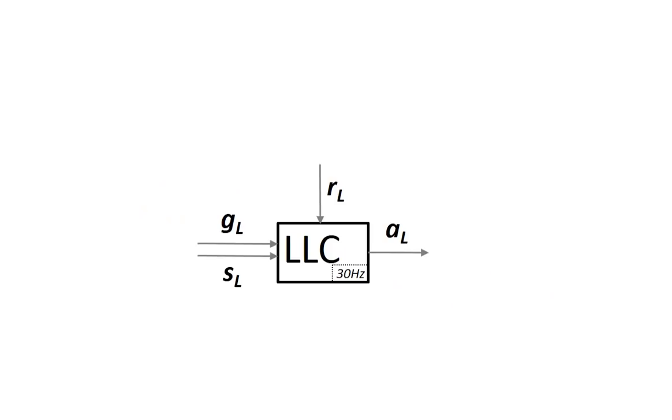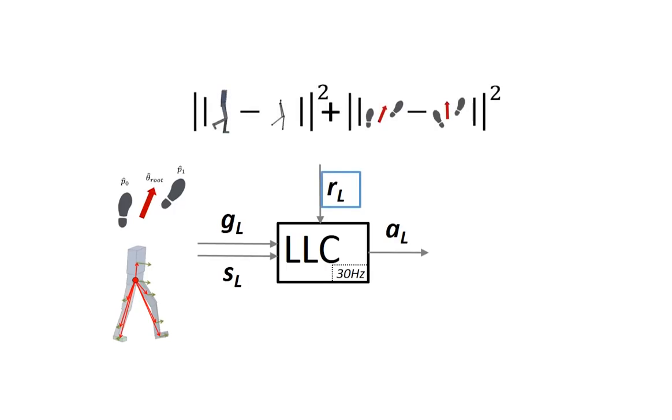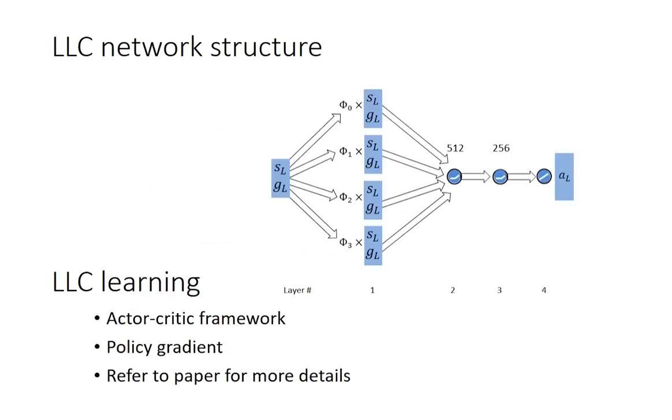The low-level controller inputs consist of footstep-based goals and the state of the character. It receives rewards for following a desired style and meeting the footstep-based goals, and outputs desired joint angles. The low-level controller is represented by a fully connected network and trained using an actor-critic framework.